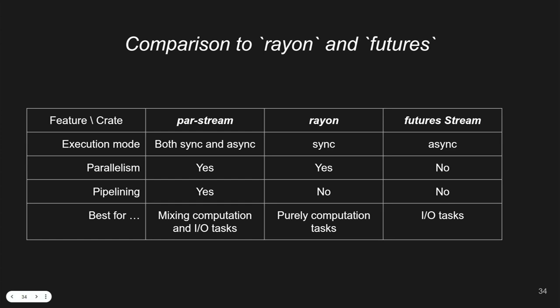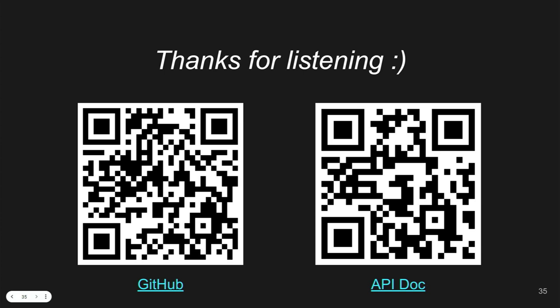Finally, a brief comparison: similar frameworks include rayon and futures. Rayon existed back in 2018 — it focuses on pure computation optimization, mainly parallelization, but doesn't handle IO so it has no async. The futures crate focuses specifically on IO tasks — no parallelization, no pipelining, but great for scheduling many tasks and calling idle workers back. My design combines the best of both worlds.